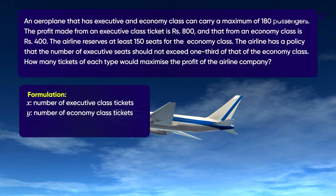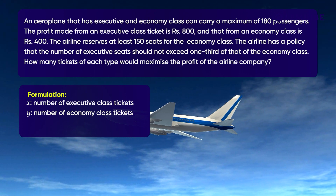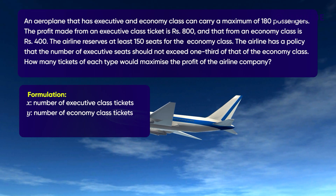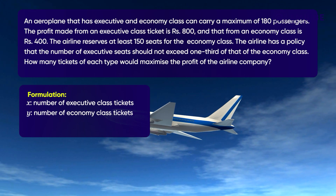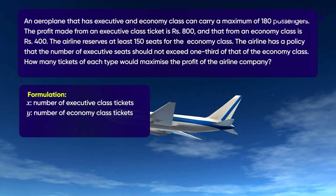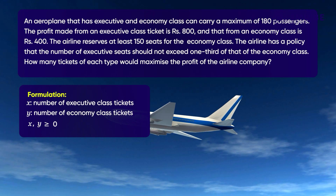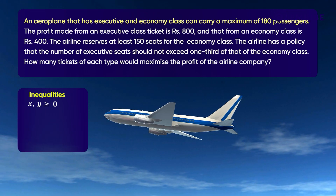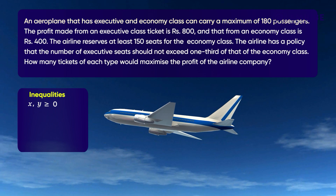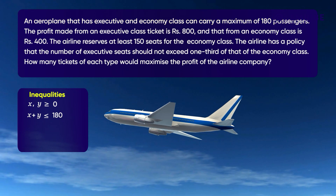First, let us convert this practical problem statement into an algebraic problem. Let the number of executive class tickets be X and the economy class tickets be Y. For the airline to make a profit, both variables should always be greater than or equal to zero — our first constraint: X, Y ≥ 0. Since an aeroplane can carry a maximum of 180 passengers, X plus Y should be less than or equal to 180.